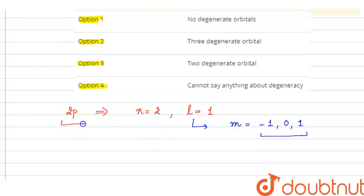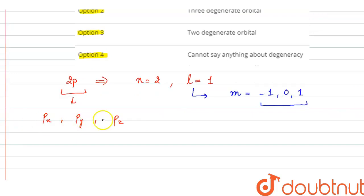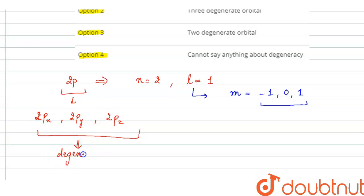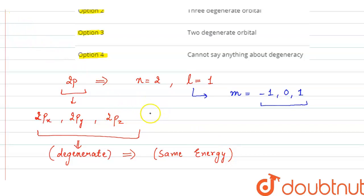The three p orbitals are px, py, and pz, and these p orbitals have a dumbbell shape. For 2p specifically, we have 2px, 2py, and 2pz. All these 3 orbitals will have the same energy — all three are degenerate. Degenerate means same energy. This is basically in the absence of a magnetic field.